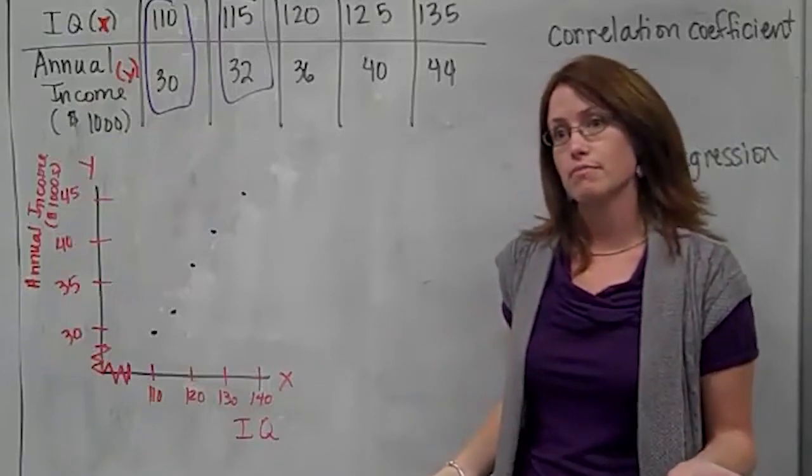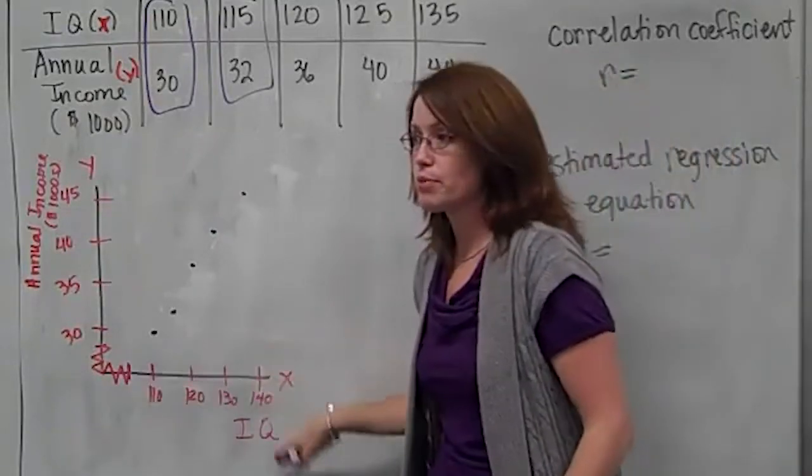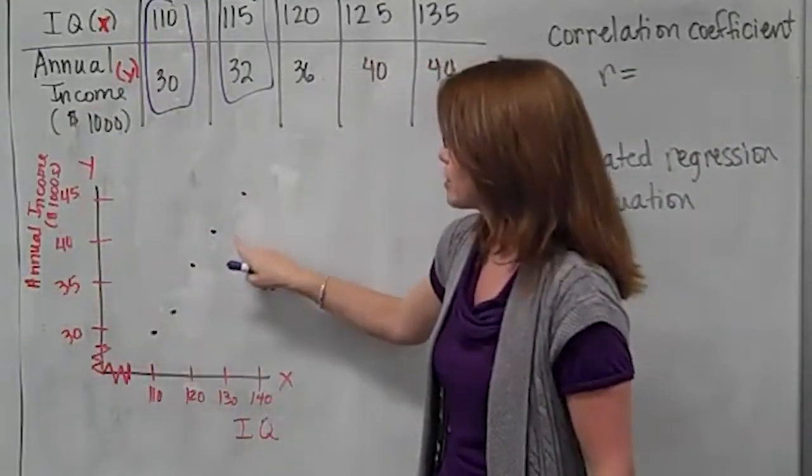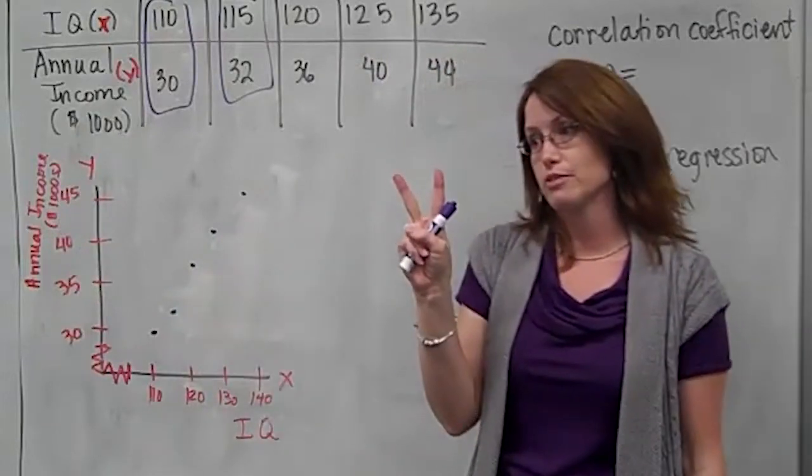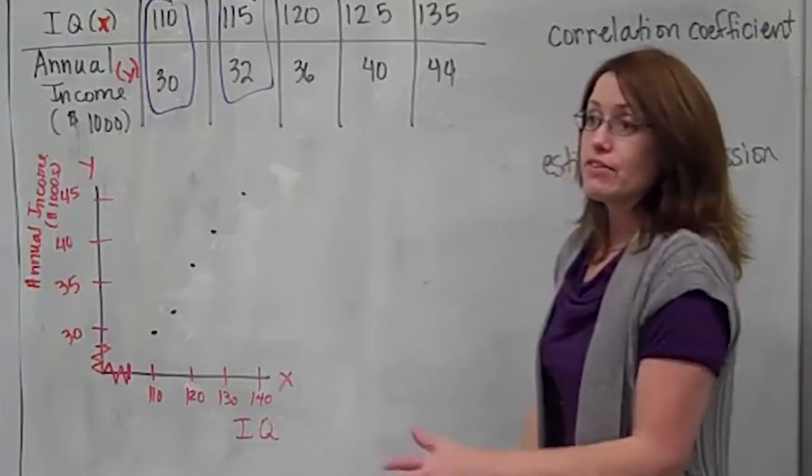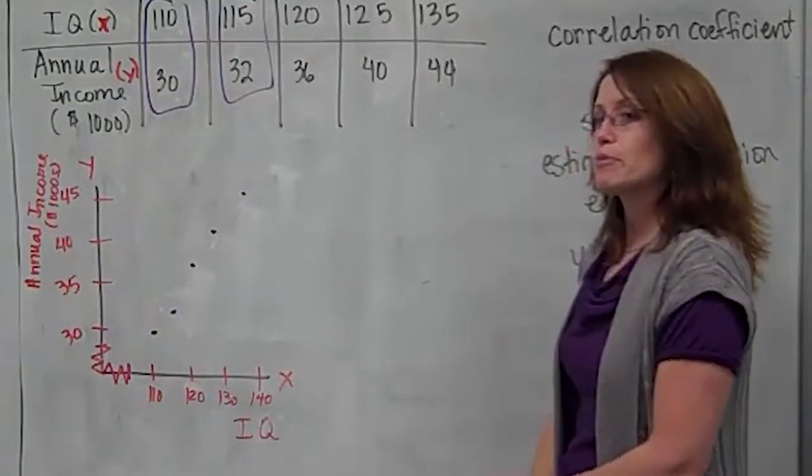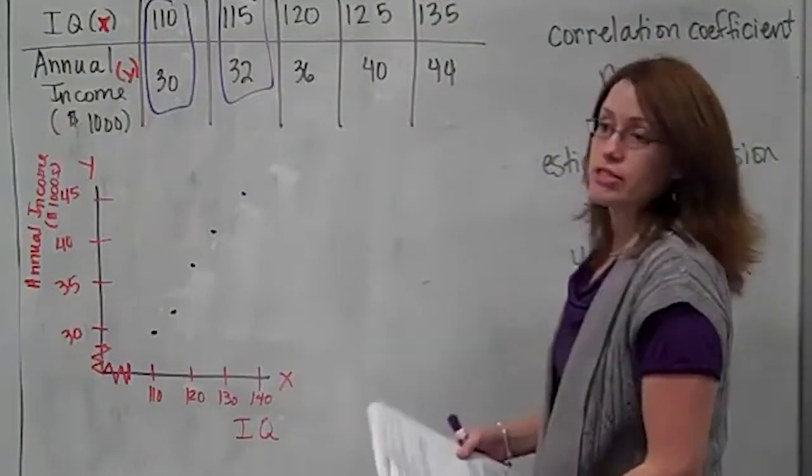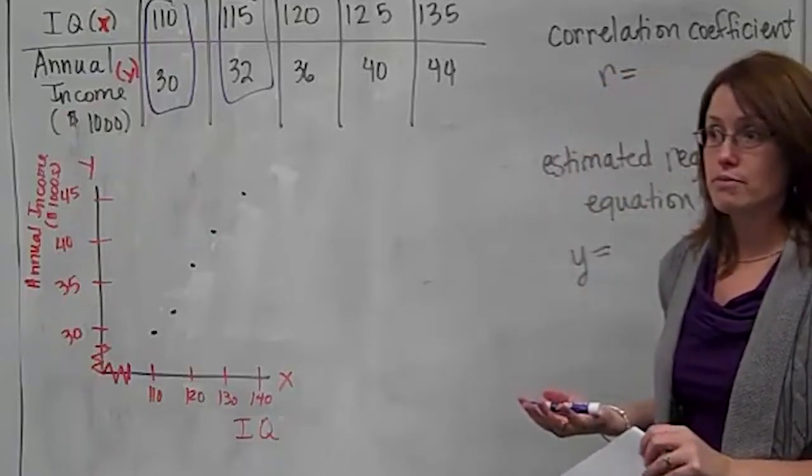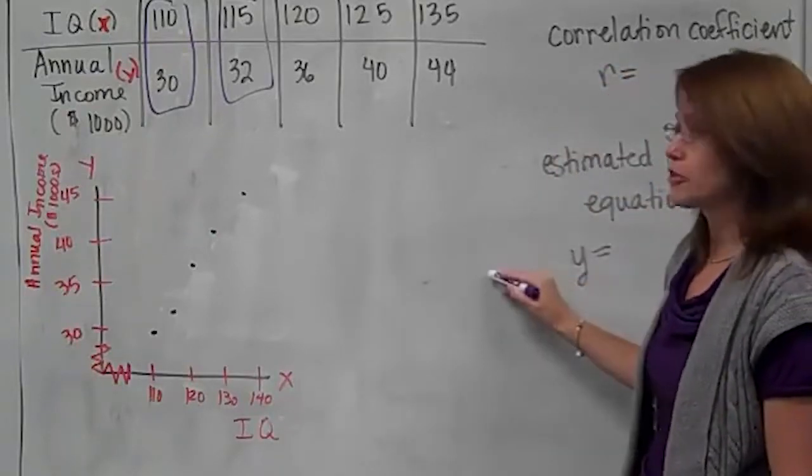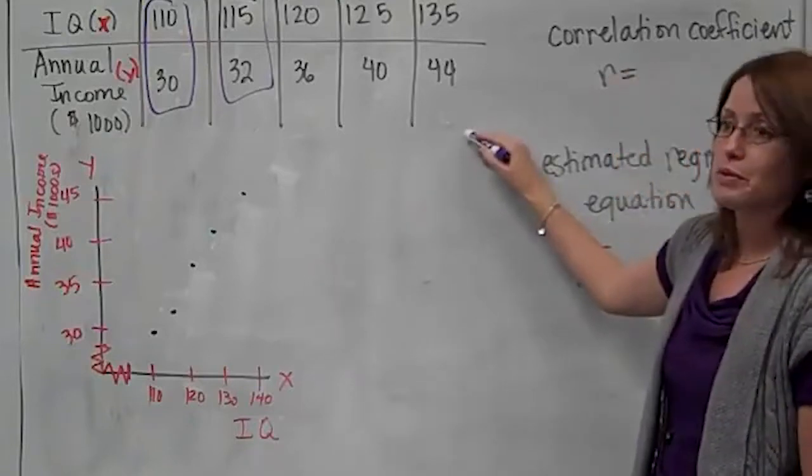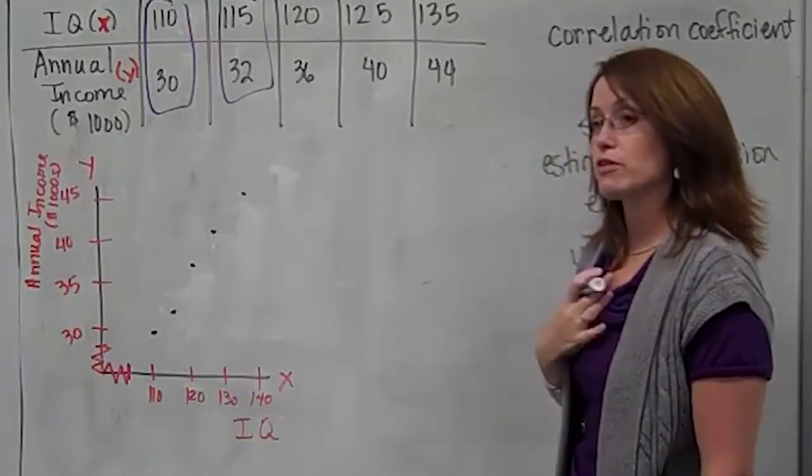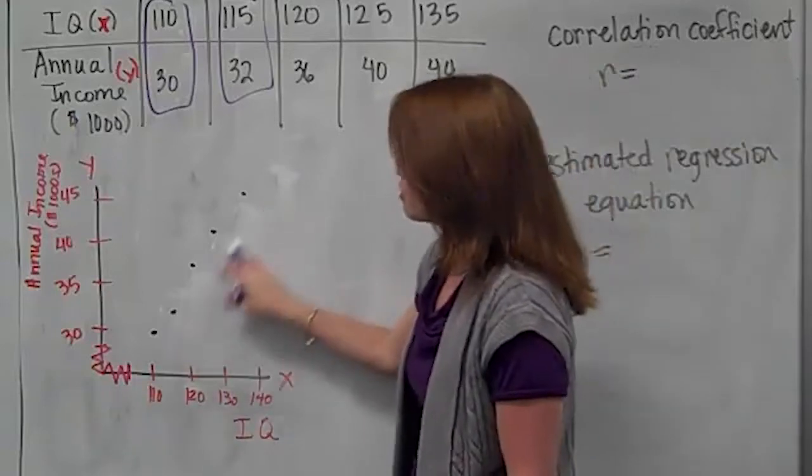Next one is 115 and 32. I'll estimate where 115 is and where I think 32 would be and put a dot. But I will not connect it. You never connect the dots. Next one is 120 with 36, about right here. All of a sudden, they don't look like they're in a straight line. But that's okay. They're not going to be. Last one is 135 and 44. That's all you have to do for your graph. That's a scatter plot.